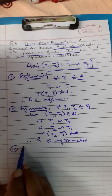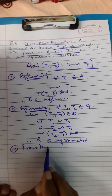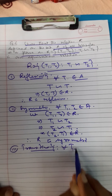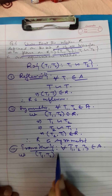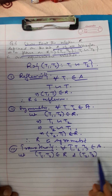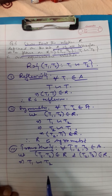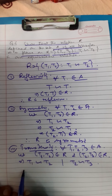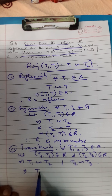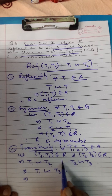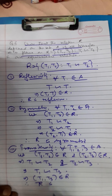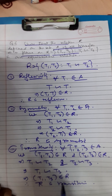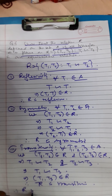For transitivity: let t1 comma t2 belong to R and t2 comma t3 belong to R. It implies t1 is similar to t2 and t2 is similar to t3. Therefore, t1 is similar to t3, which implies t1 comma t3 belongs to R. Therefore, R is transitive. Since R is reflexive, symmetric, and transitive, R is an equivalence relation.